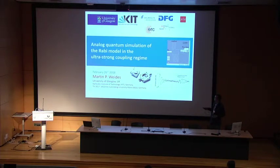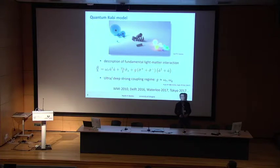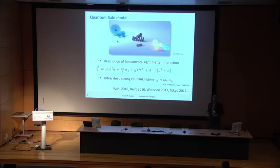The Rabi model is of fundamental interest — it describes the most fundamental interaction between light and matter. Here's a graphical depiction taken from a conference Enrico Solano organized probably a year or two ago: we have light or photons, a harmonic system, and matter in its simplest form as a qubit.